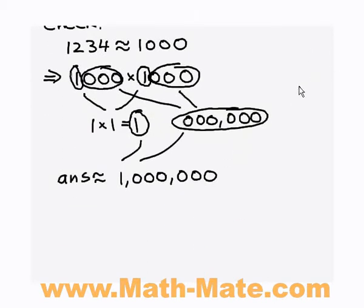Now the answer we got was, we didn't get a million. So what we got was 151,782. Now if you look at our rounding off, we rounded both of our numbers down.